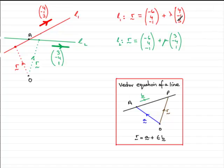We're told the directions that the lines are going in, 4 minus 1, 3, and 3 minus 4, 1. And these points are known fixed points on the line.